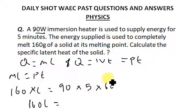If you use your calculator, the answer is 27,000. So 160L = 27,000.